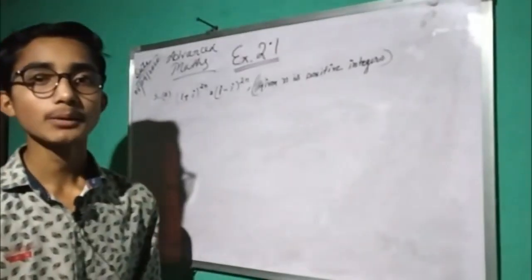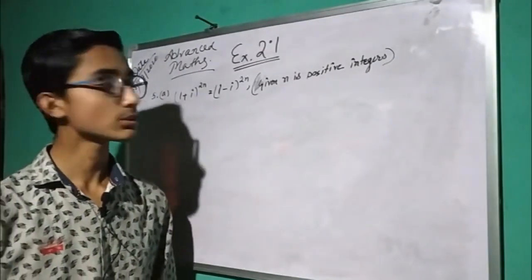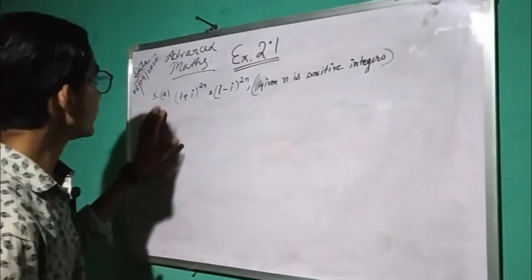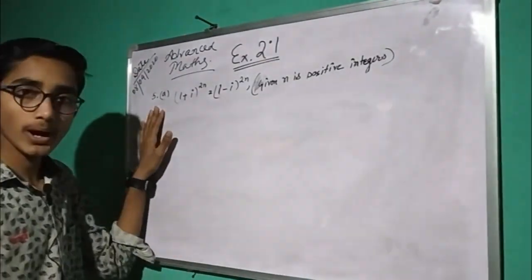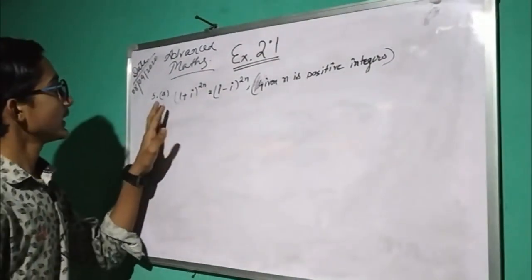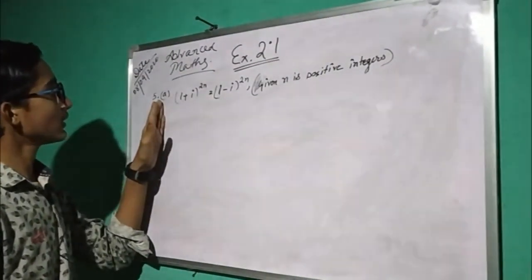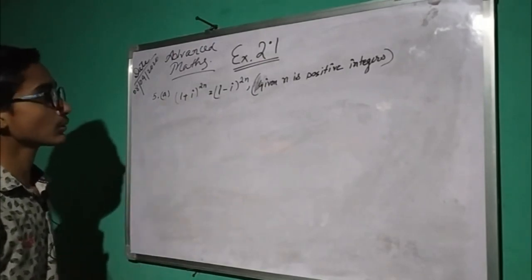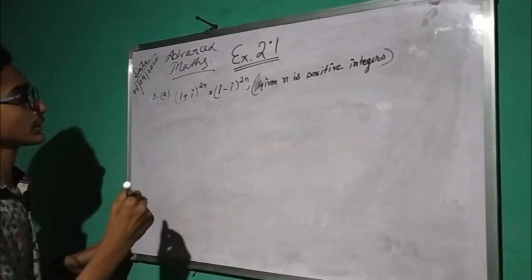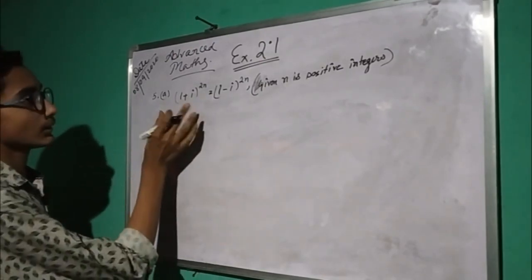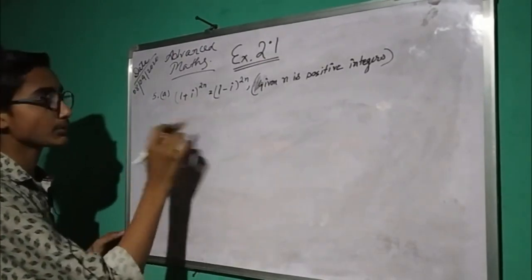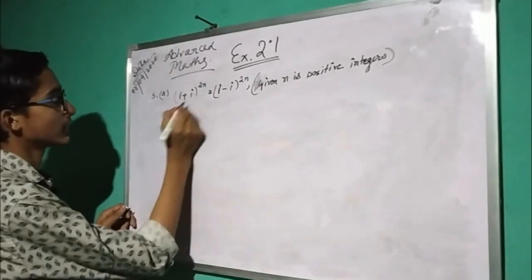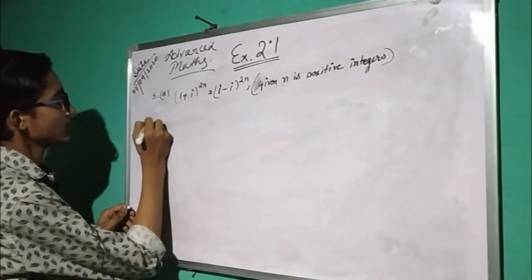Now we have question number 5. Here we have 5 or a, this is our core ratio, and b. This is the core of the basic.